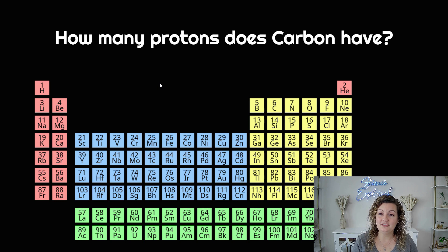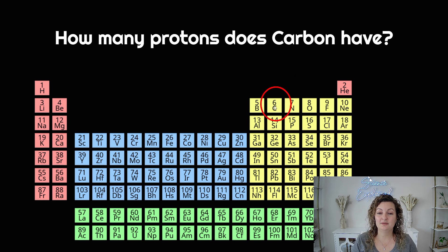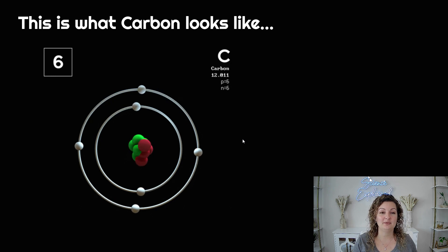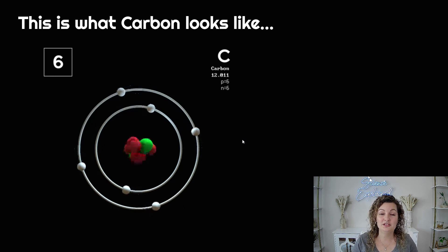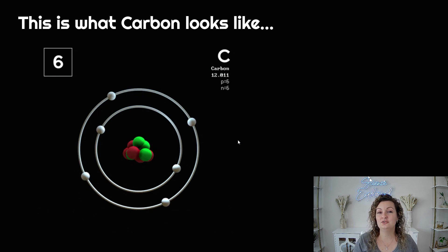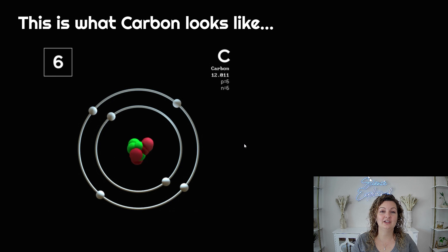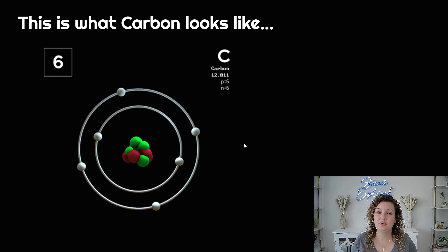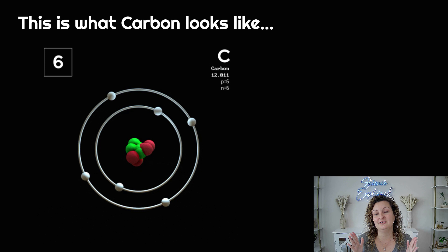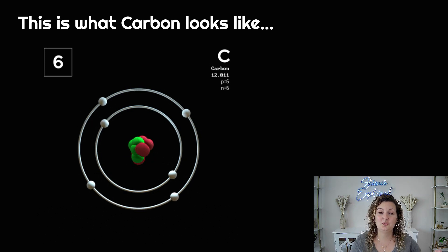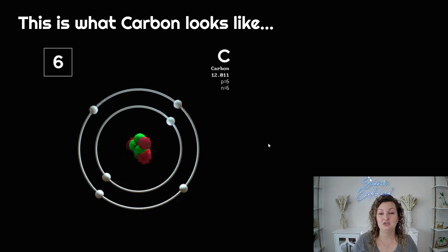How many protons are in carbon? We look for carbon on our periodic table — it is a capital C. When you find it you will see the atomic number six. So we have six protons in carbon, and this is what carbon looks like. Six protons are found in the center of the nucleus, then we have six neutrons, and then we have six electrons — equal to our protons because positives and negatives have to equal one another in order for this atom to be neutral.